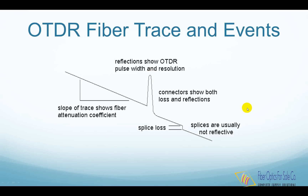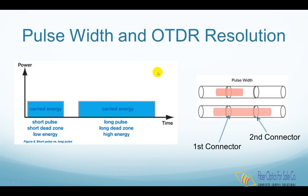Reflective pulses can show you the resolution of the OTDR. You cannot see two events closer than is allowed by the pulse width. Generally, longer pulse widths are used to see farther along the cable plant, and narrower pulses are used when high resolution is needed, although this limits the distance that the OTDR can see.